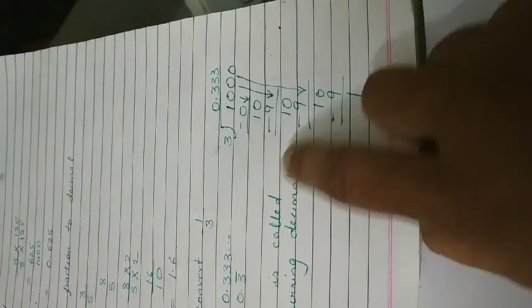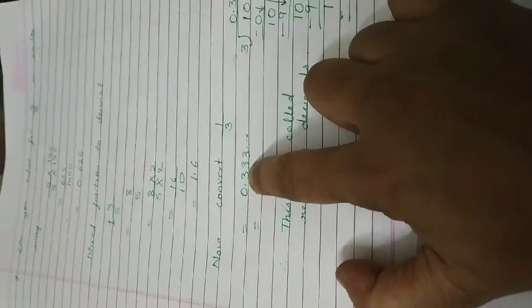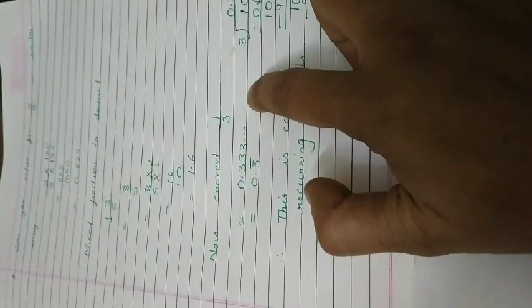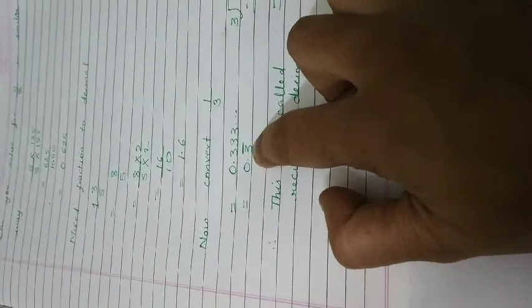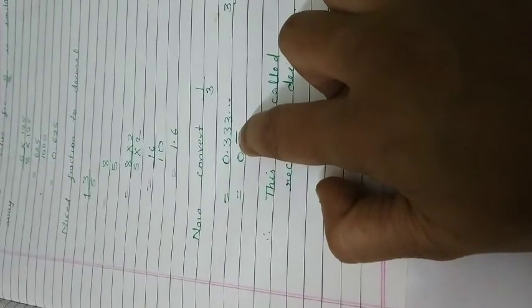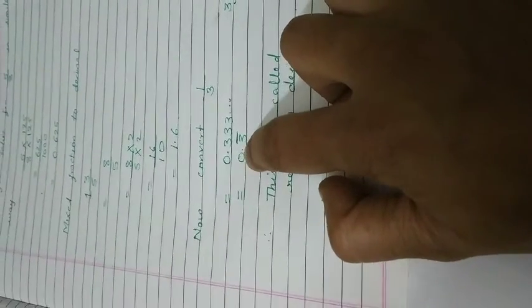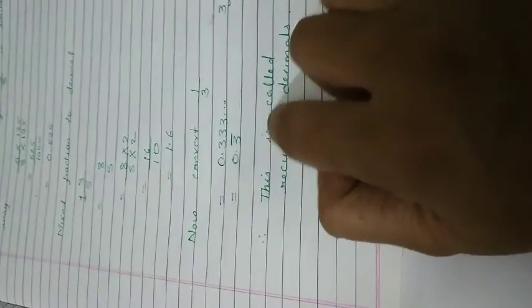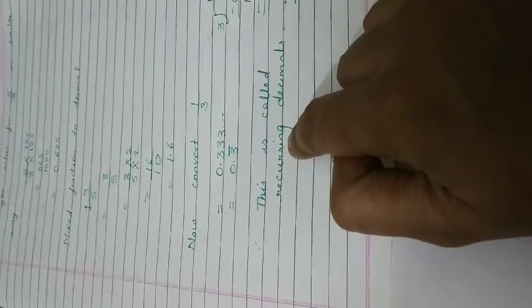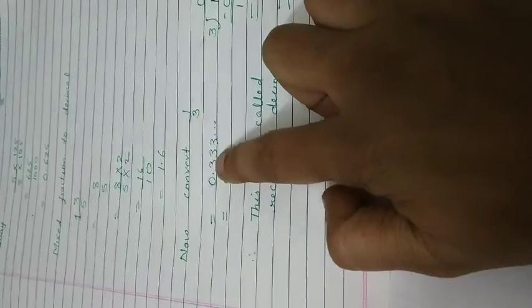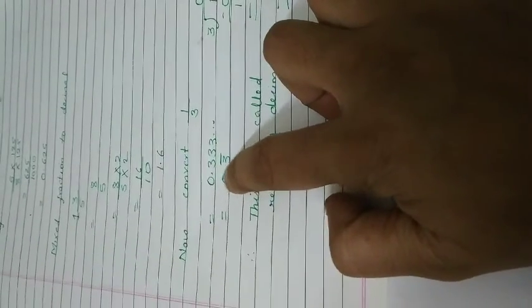So, the answer becomes 0.333 and so on. And can be written in the form of 0.3 and the dash. This dash is known as bar. So, 0.3 bar. This method is nothing but recurring decimals. Recurring means repeating of digits. So, 0.333 can be written in the form of 0.3 bar.